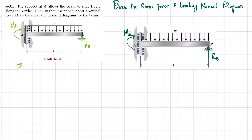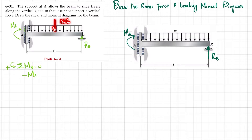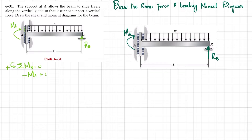Our first equilibrium condition is that the sum of all moments about point B equals zero, taking counterclockwise as positive. There is a clockwise moment, so that is minus MA, plus the moment due to load W. When converted to a point load it will be W times L, acting at a distance of L/2, producing a counterclockwise moment, so it is positive: plus W·L · (L/2) = 0. From here, the moment at point A equals WL²/2.